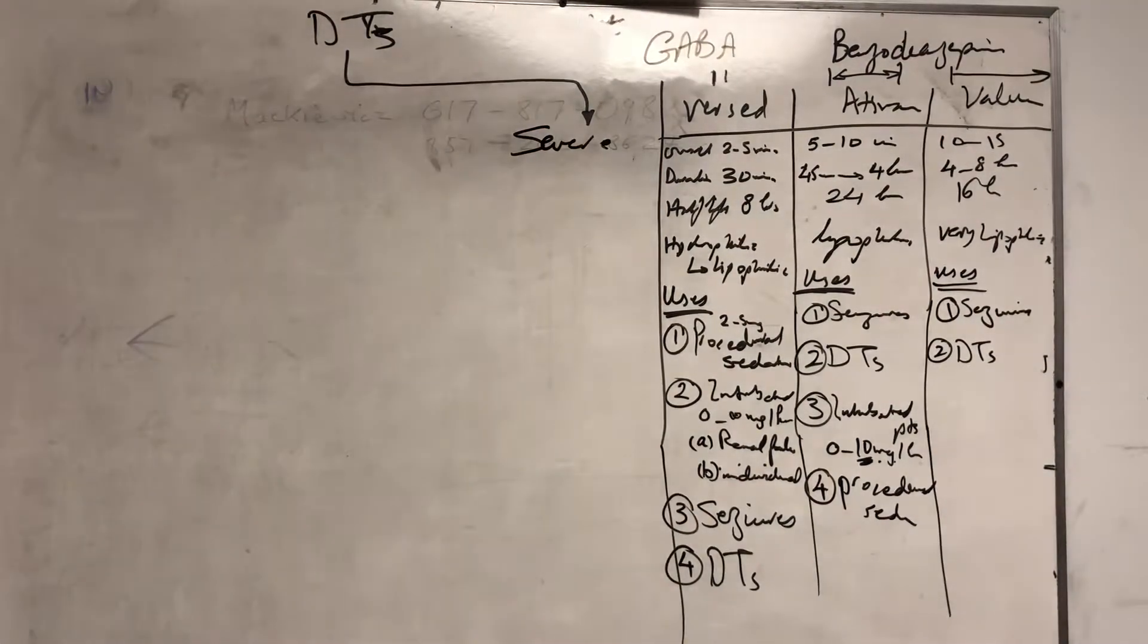For severe DTs I didn't even want to explain it, you'll know it yourself especially when you come here. You're gonna see somebody who is combative, fighting, spitting, four-point restraints, seizure - that's severe DTs. High blood pressure, that's not severe, that's moderate.